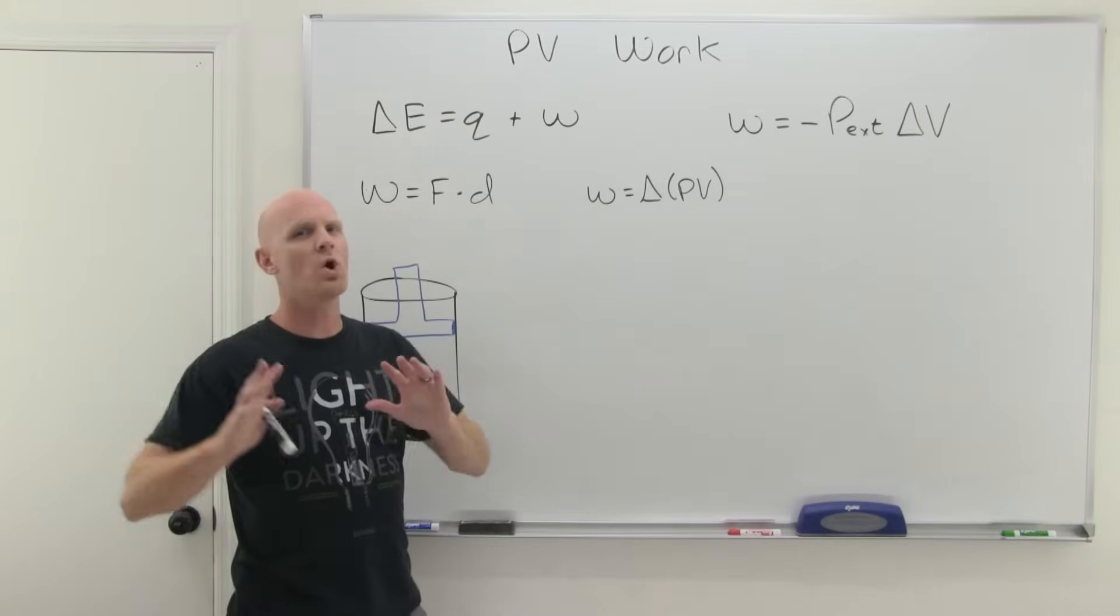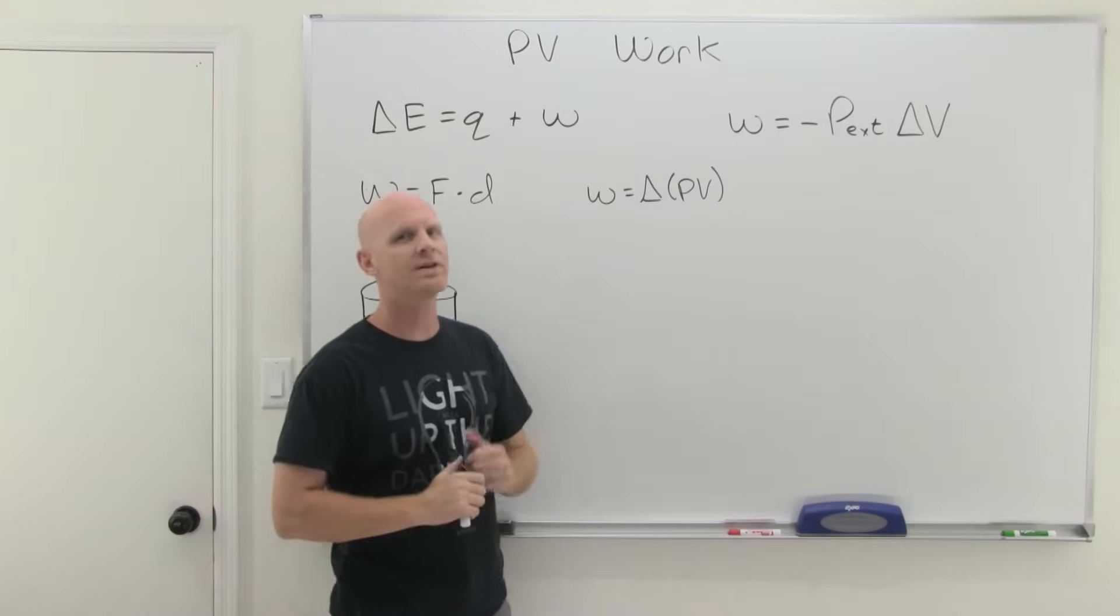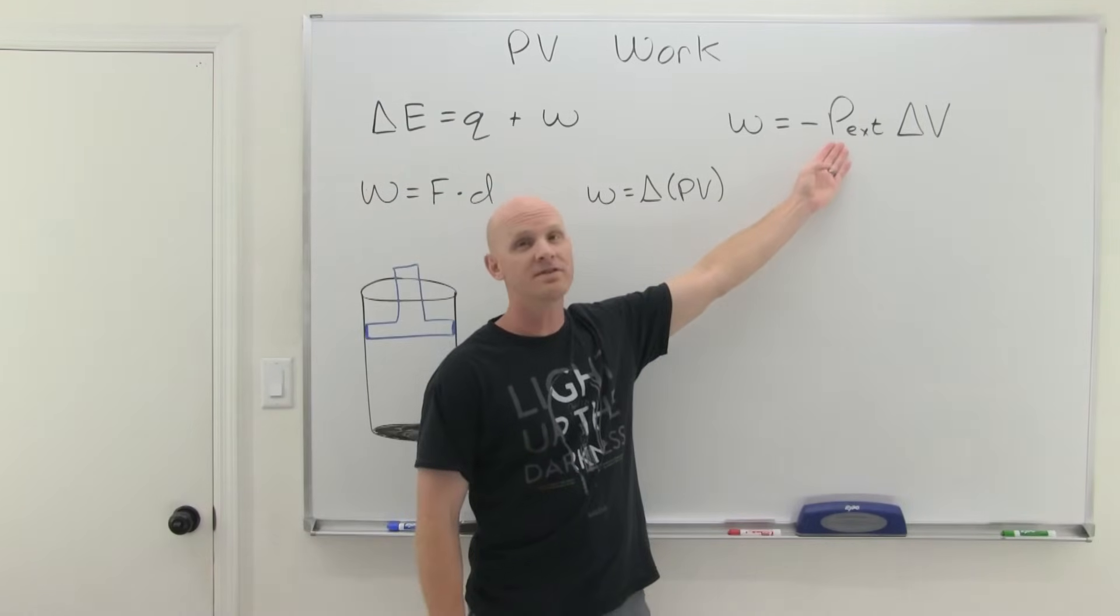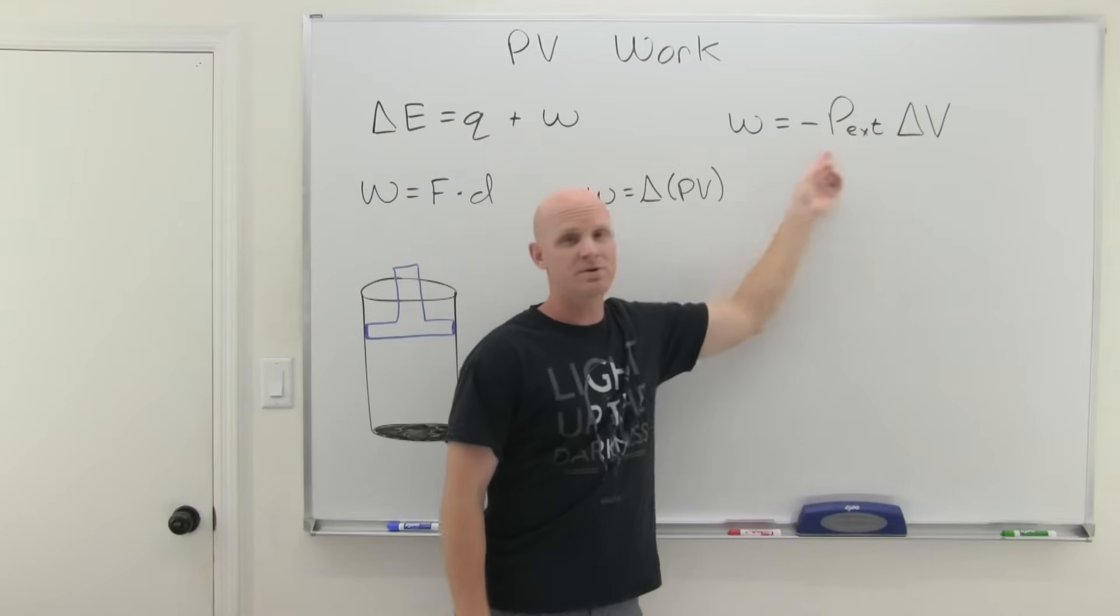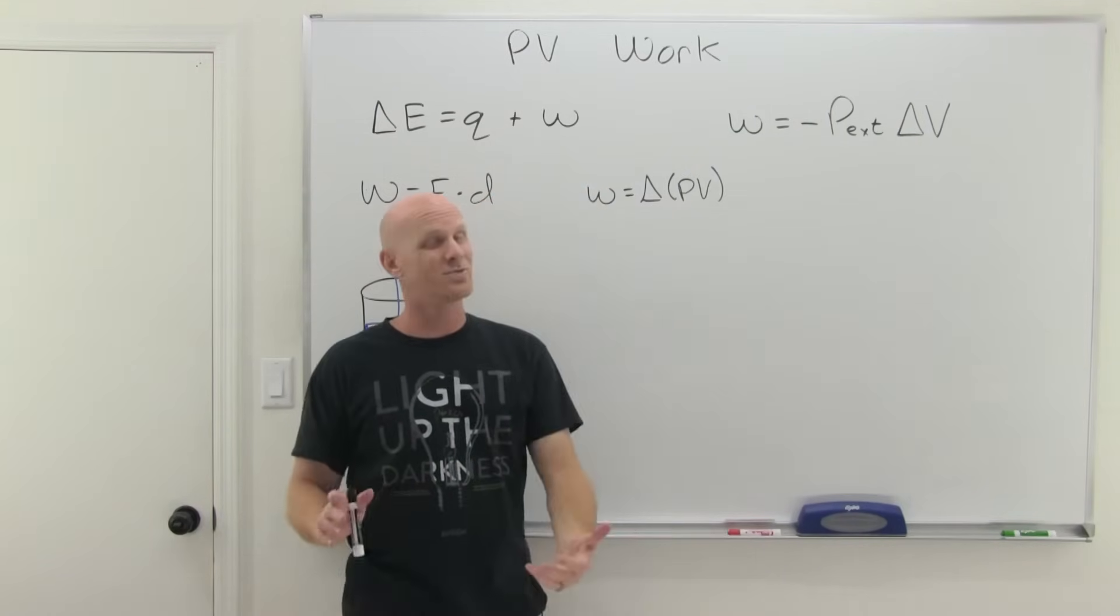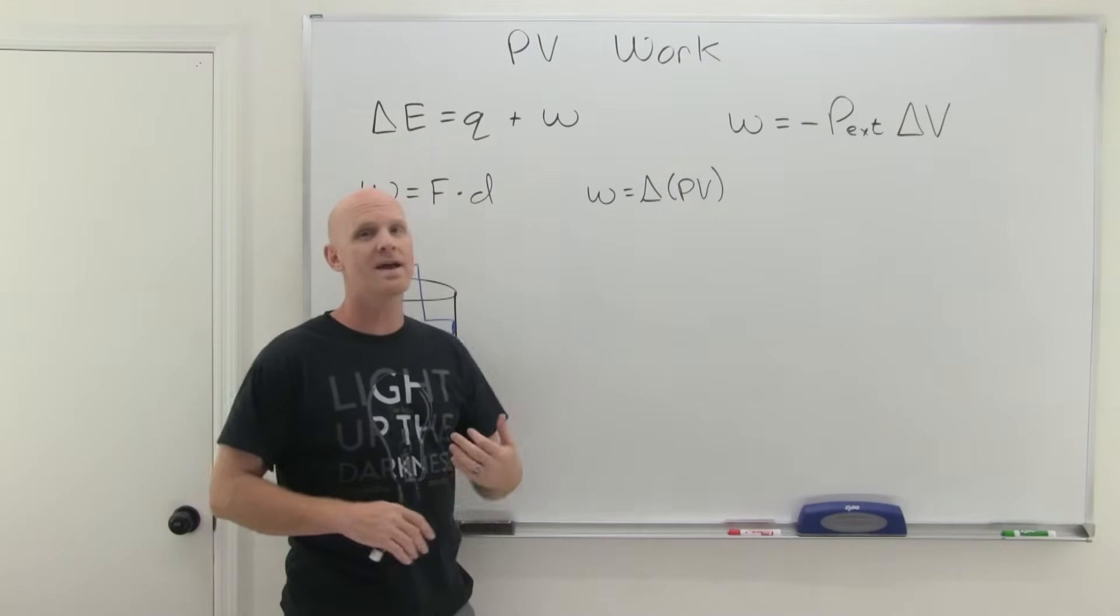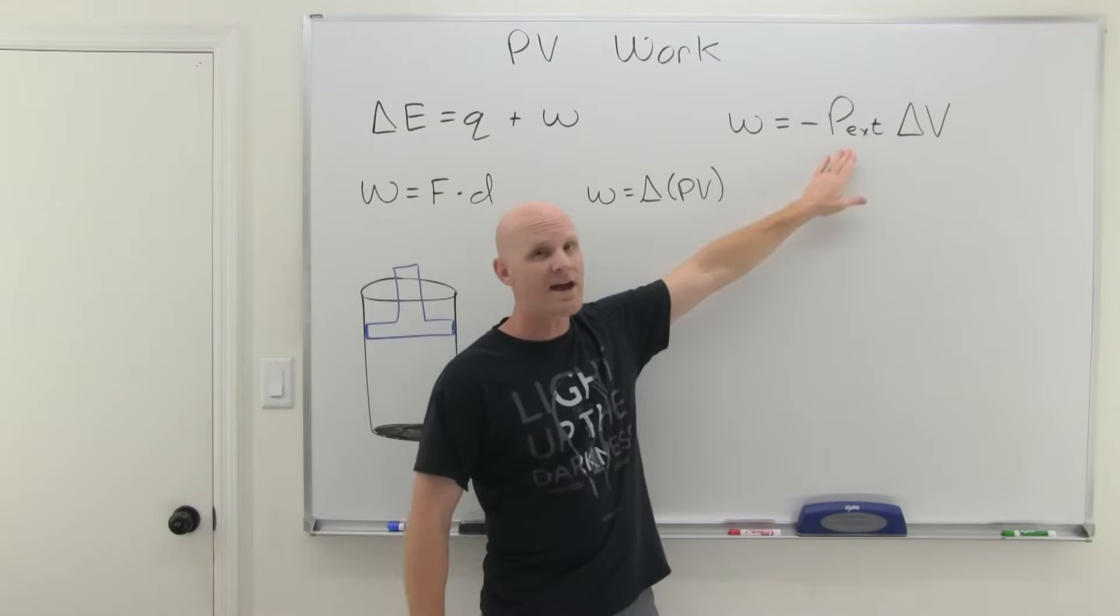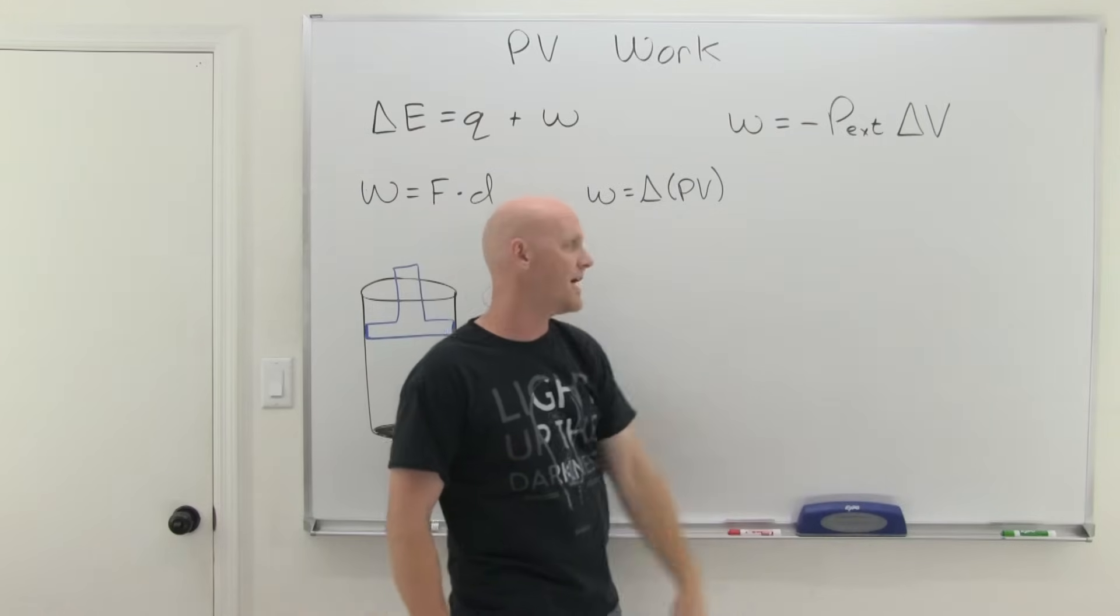And so oftentimes we just say we're only going to have general chemistry students calculate work under constant external pressure, which is why it reduces to this lovely equation which doesn't involve taking an integral. Most of you aren't going to be on the hook for any kind of PV work except PV work at constant external pressure.